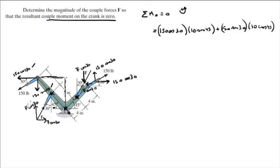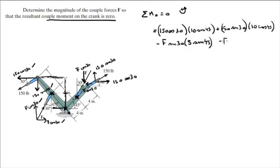The next moment is created by this force going this way, turning the lever arm that goes from here to here. That is negative because it makes a clockwise moment: F sine of 30 times the length of the lever arm, which is 5 sine of 45. Then the moment created by this force is also a clockwise moment, so it's negative, and it's turning this lever arm right here — that would be minus F cosine of 30 times 5 cosine of 45.